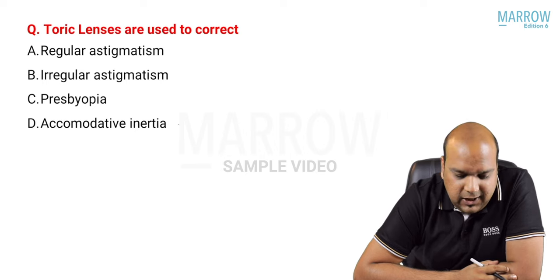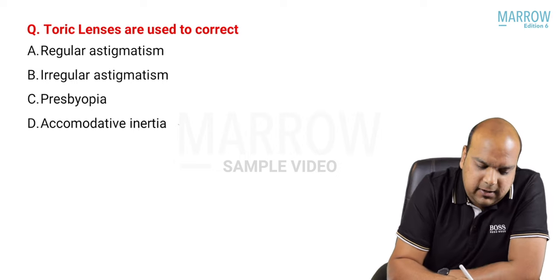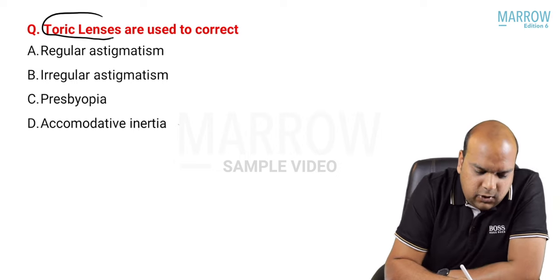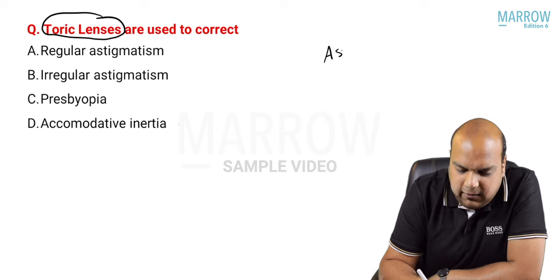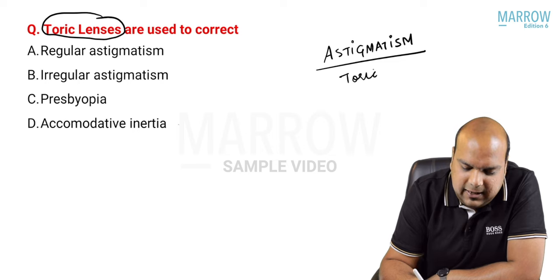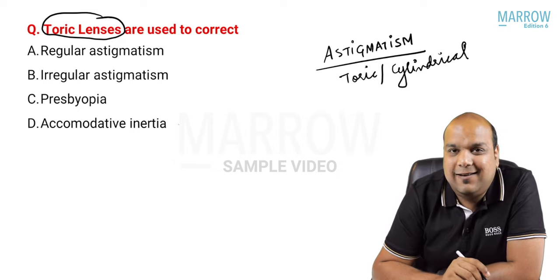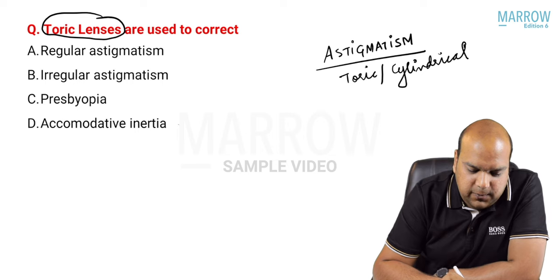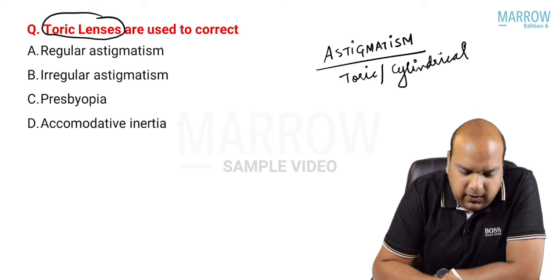Next question: toric lenses are used to correct what? In optics, whenever we encounter the word 'toric,' we associate it with astigmatism - toric is basically another name for cylindrical. At the outset, two options look likely: regular astigmatism or irregular astigmatism.